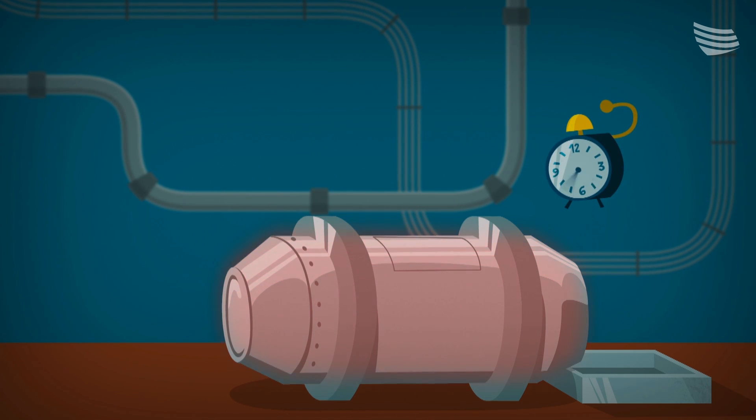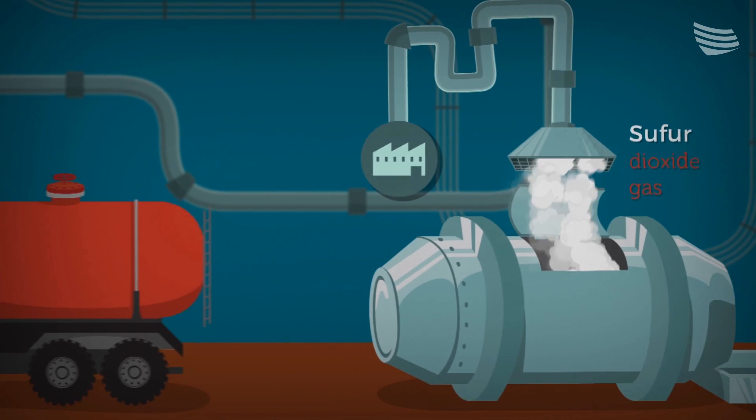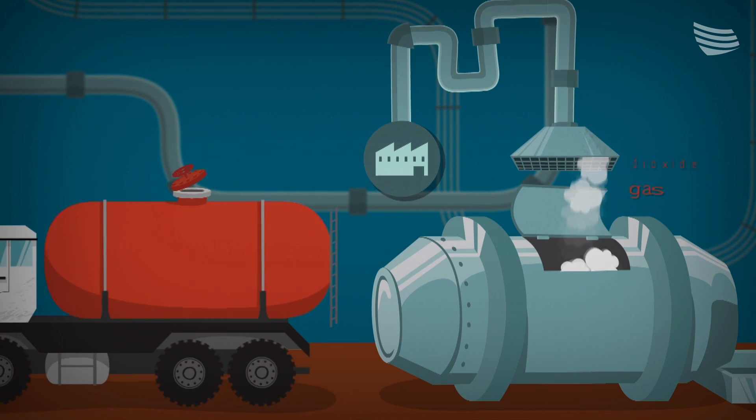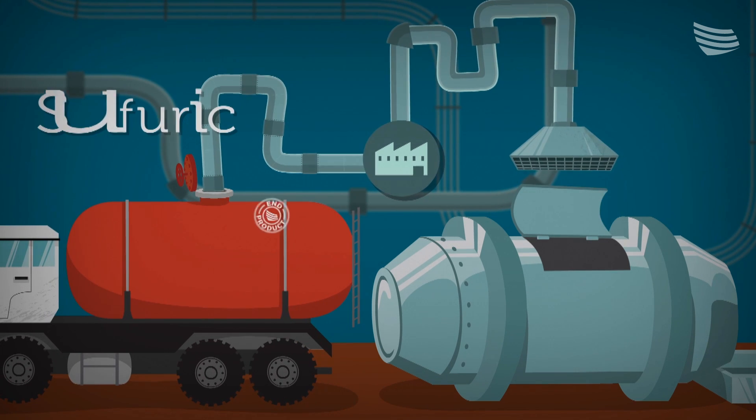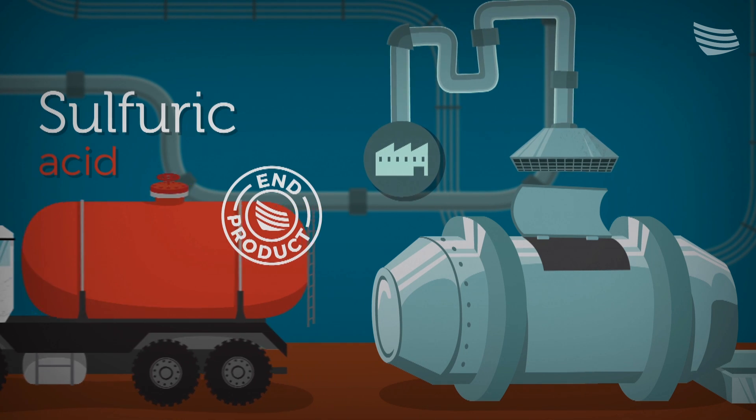Conversion produces sulfur dioxide gas. This gas and the gas from the flash furnace are filtered and water cleaned to make sulfuric acid, a product with many different uses.